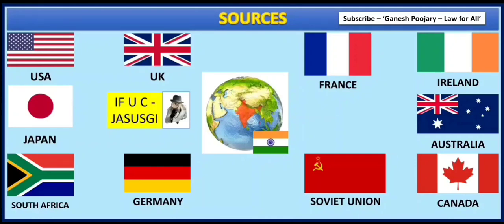If you break those 11 letters, you will get all the country names: I for India, F for France, U for United States of America, C for Canada, J for Japan, A for Australia, S for Soviet Union, U for UK, S for South Africa, G for Germany, and I for Ireland. All of them are covered in these 11 letters.